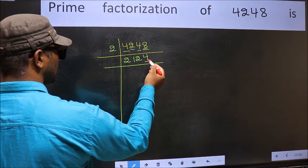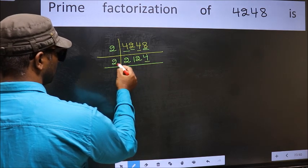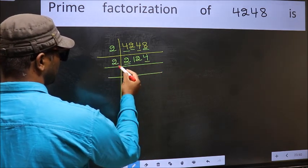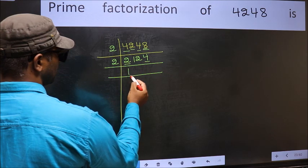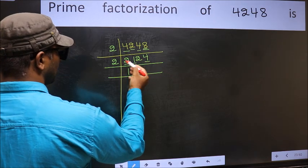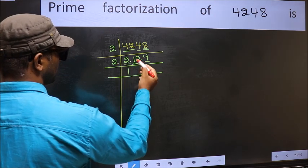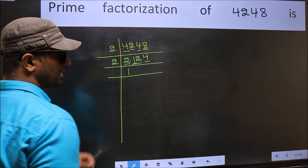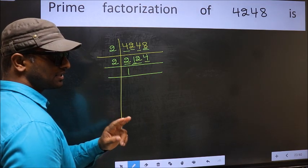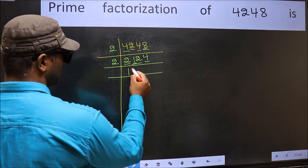Now, the last digit is 4, so take 2. First number 2 — when do we get 2 in the 2 table? 2, 1's 2. The other number 1 is smaller than 2, so take 2 numbers: 12. Remember, whenever you are taking 2 numbers, compulsory put 0.